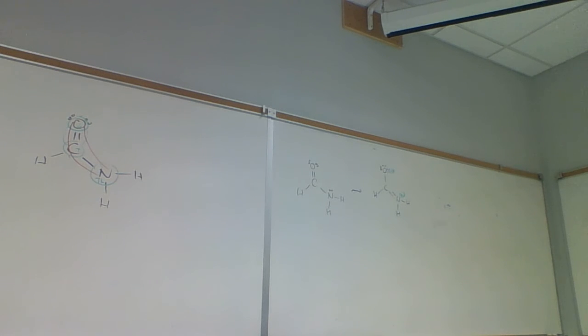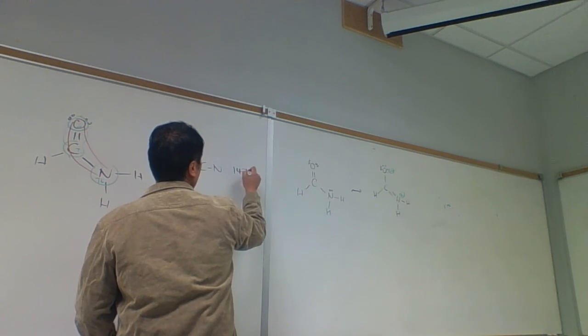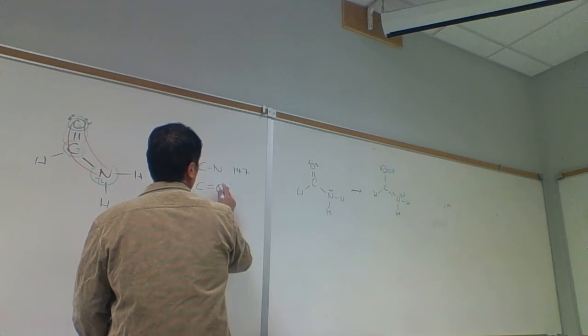If we go back to chapter 10 and look at the bond length. Okay, a carbon-nitrogen single bond is 147. So, a carbon-nitrogen 147, a double bond, and a triple bond, what are they?